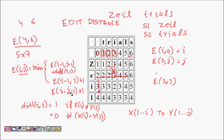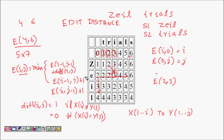Let's try to fill in one cell — say e(3, 4). Row three, column four. One, two, three and zero, one, two, three, four — so e(3, 4). What will it depend upon?